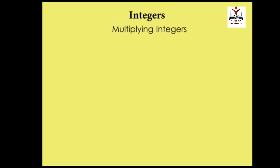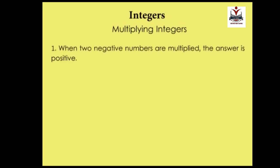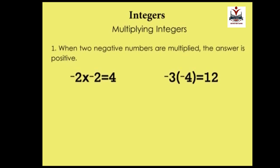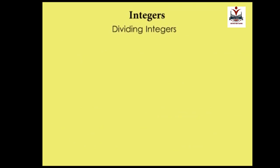Multiplying integers: integers are multiplied just like natural numbers, but with two important rules. One: when two negative numbers are multiplied, the answer is positive. So minus 2 times minus 2 is plus 4, and minus 3 times minus 4 is plus 12. Secondly, when a negative and a positive number are multiplied, the answer is negative. So minus 2 times 2 is minus 4, and 3 times minus 5 is minus 15.